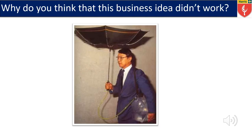I would like you to consider some reasons why you think this business idea didn't work. From the image, we can see a man who is holding an umbrella. The idea is that the umbrella collects water and empties it into a container that he holds around his shoulder — a sort of plastic bag. The water fills up in this plastic container. Take 10 seconds to think about why this business idea didn't work.